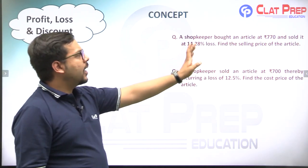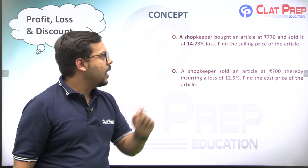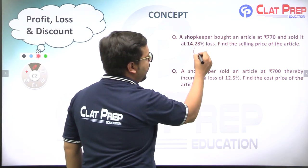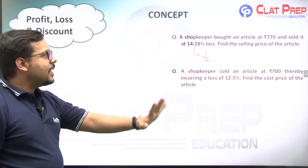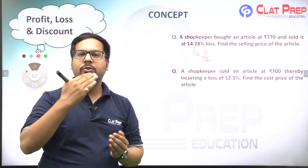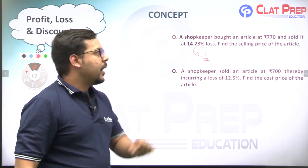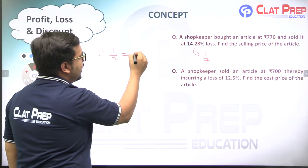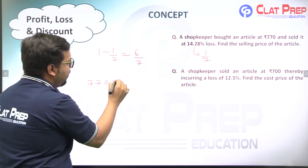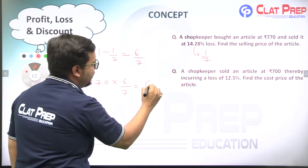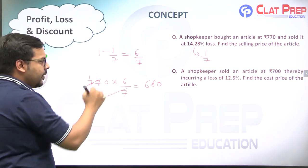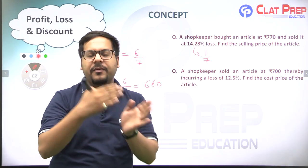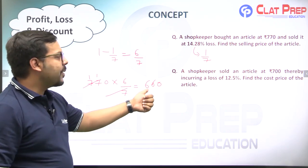Example 3: A shopkeeper bought an article at ₹770 and sold it at 14.28% loss. Find the selling price. 14.28% = 1/7. Multiplying factor = 1 − 1/7 = 6/7. Selling price = 770 × 6/7 = ₹660. Reducing cost price by 1/7 means taking its 6/7 part.